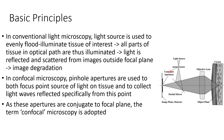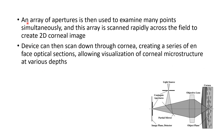Whereas in confocal microscopy, pinhole apertures are used to both focus a point source of light on tissue and to collect light waves reflected specifically from this point. As these apertures are conjugate to the focal plane, the term confocal microscopy is used. An array of apertures is then used to examine many points simultaneously, and this array is scanned rapidly across the field to create a two-dimensional corneal image.